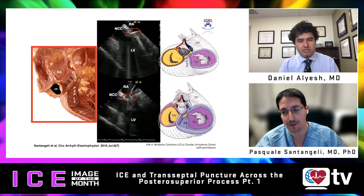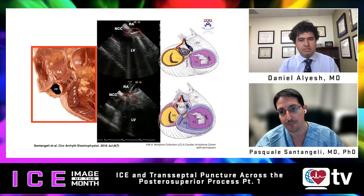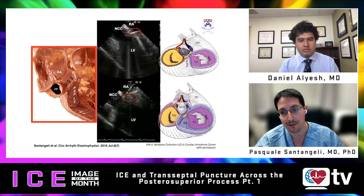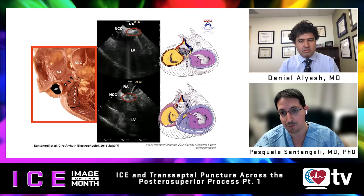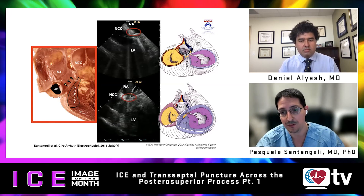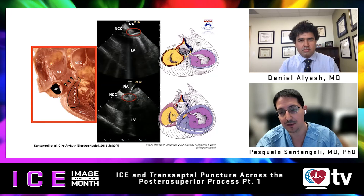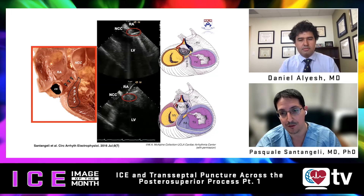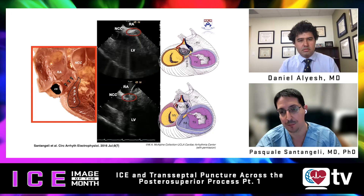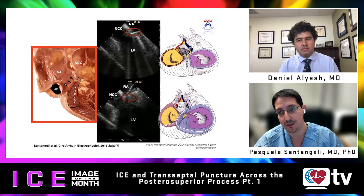In the top ICE image, an ablation catheter is deployed in a retrograde aortic fashion right under the non-coronary cusp, in contact with the left ventricular endocardial aspect of the inferior septal process. In the bottom ICE image, a catheter is deployed from the right atrium, touching the opposite side of the inferior septal process. PVC suppression was achieved from the right atrial aspect.